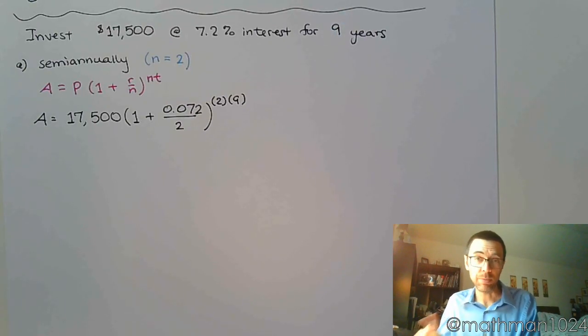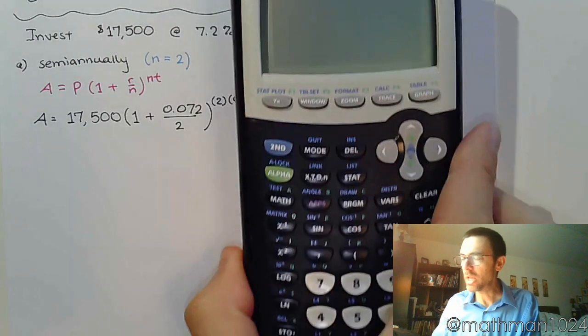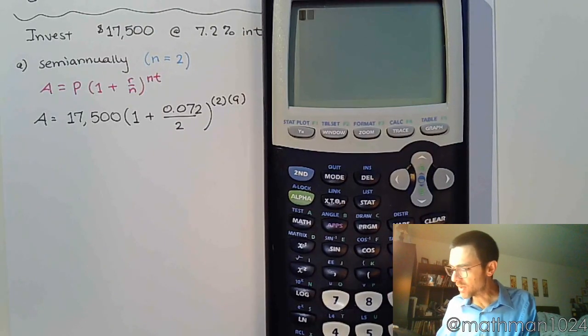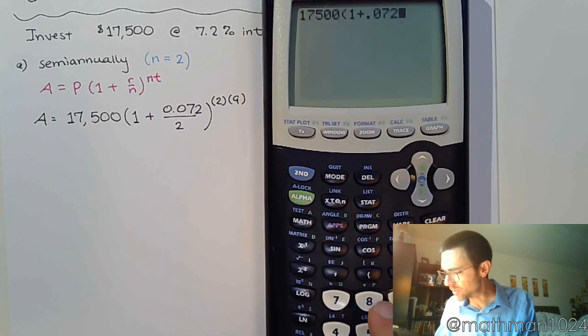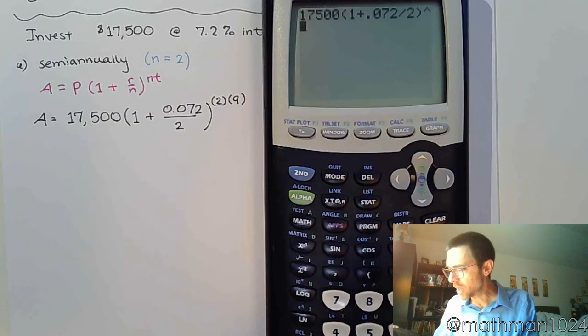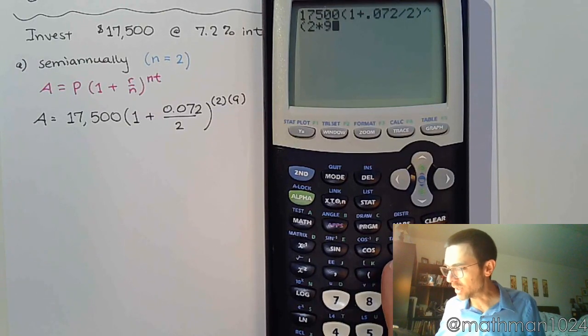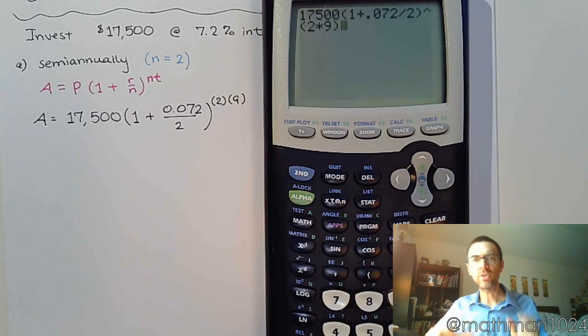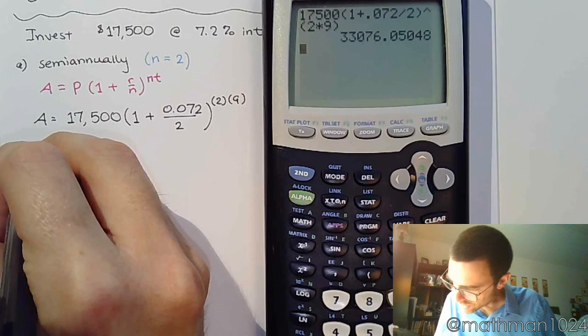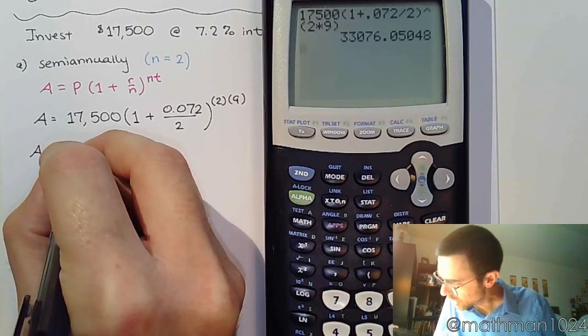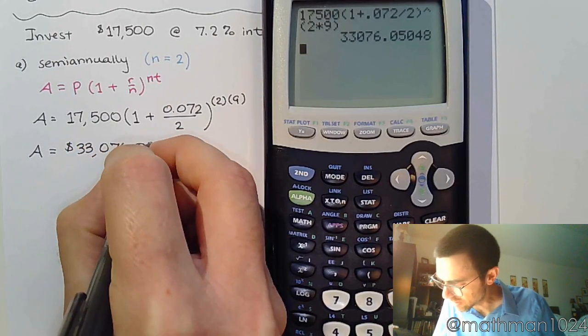Now, I'm not doing this by hand. I'm just not. It's going to take a long time, which is why we have the calculator. So 17,500 times 1 plus 0.072 divided by 2, raised to the number. Remember the issue we had in the last video? Use your parentheses before you do the 2 times 9. That way the 2 and the 9 are clearly in the power. And we come up with this. So our final amount is $33,076.05.